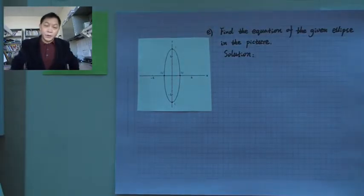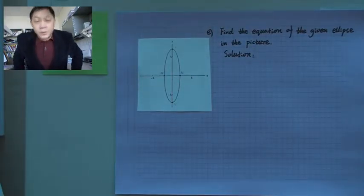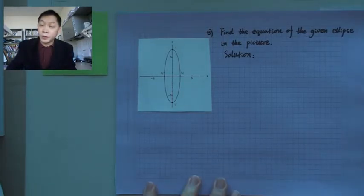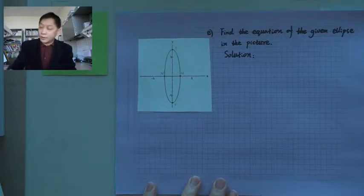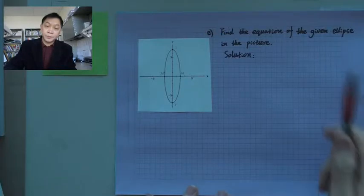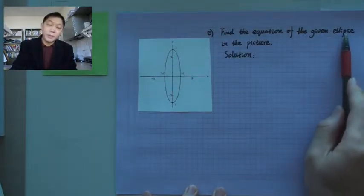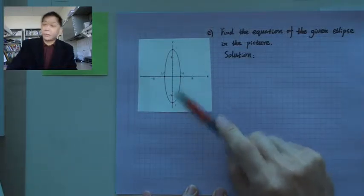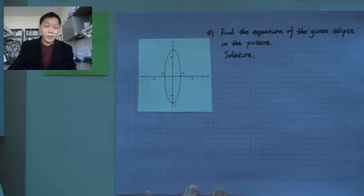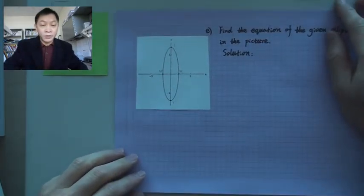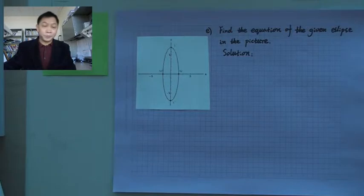In this lecture, we will keep working on the examples for the equation of ellipse. Let's look at this example: find the equation of the given ellipse in the picture. We need to find the given conditions.